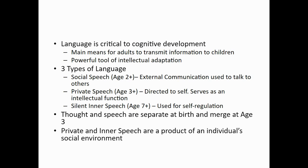Inner speech is still used for cognitive development, but it's also used for self-regulation — like telling yourself you shouldn't cheat on an assignment. At birth, Vygotsky says that thought and speech are separate. But by age three, they begin to merge, where now we can think and talk about the things we're thinking about and they become connected. Finally, that private and inner speech — the way a child talks to themselves and has that inner monologue — is a product of the social environment. It's a product of the lessons taught by their parents, peers, and other people within their environment.